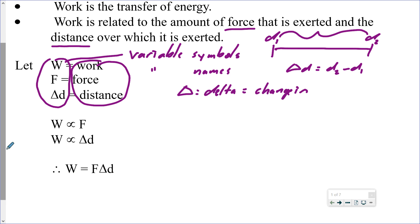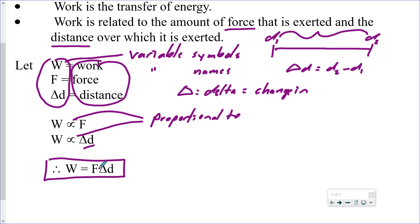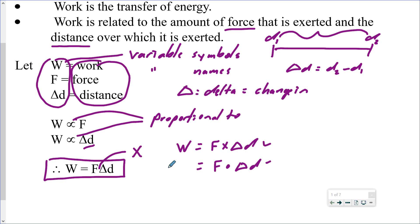Work is directly proportional to force — the greater the force, the more work is done. There is a similar proportional relationship between distance and work: the further an object has been moved, the greater the amount of work done. We can derive the equation: work equals force times the change in distance, W = FΔd. You'll also see this written as W = F · Δd using a large dot to mean multiplication.